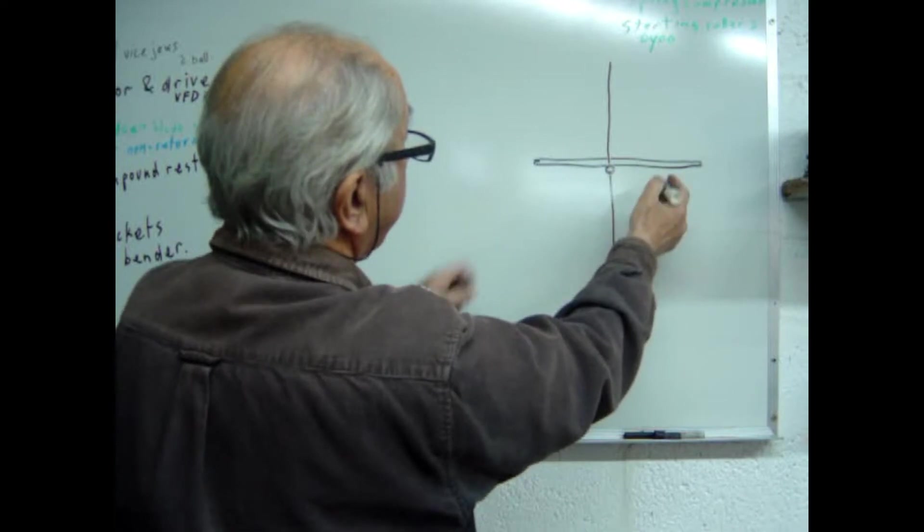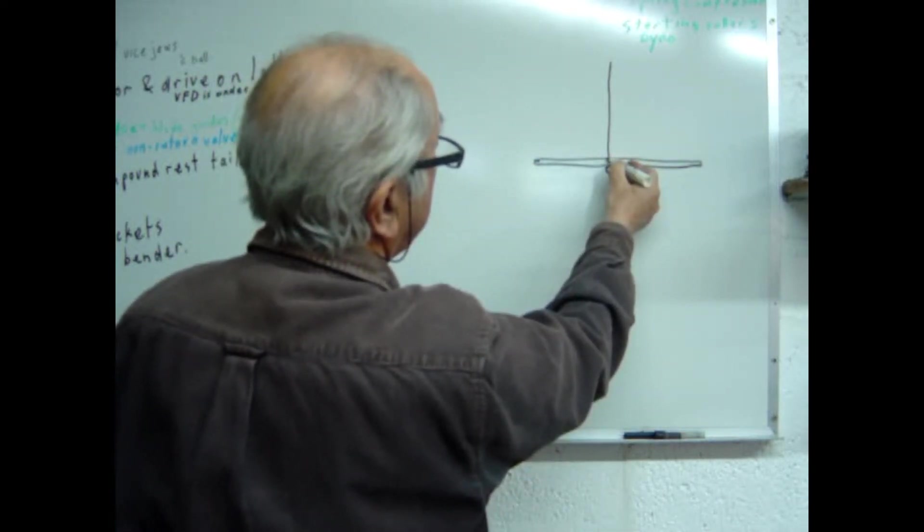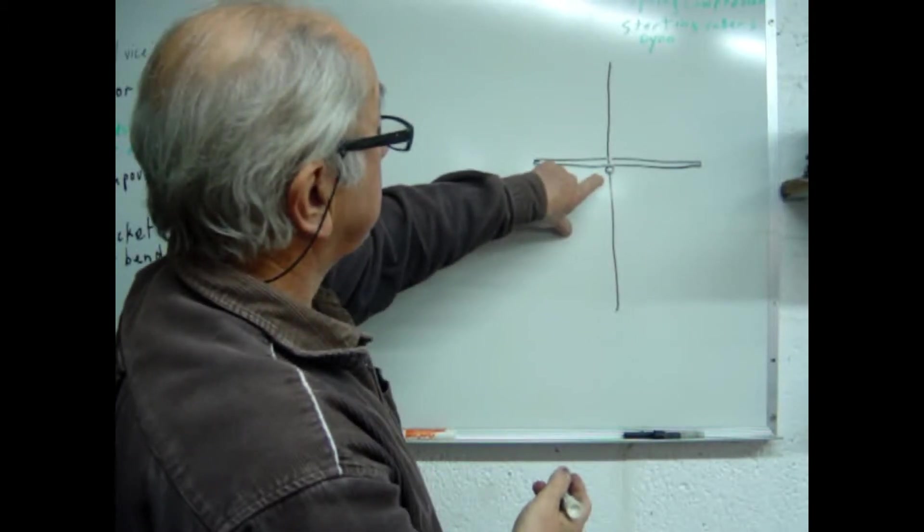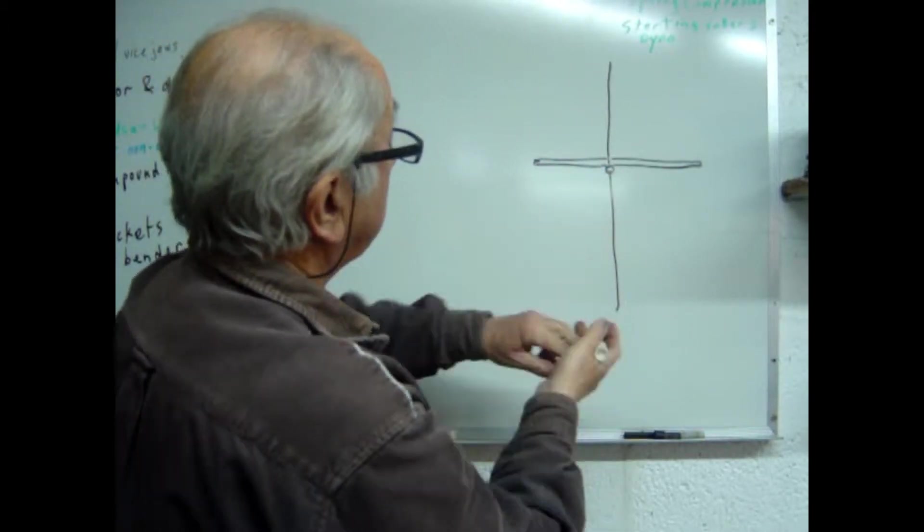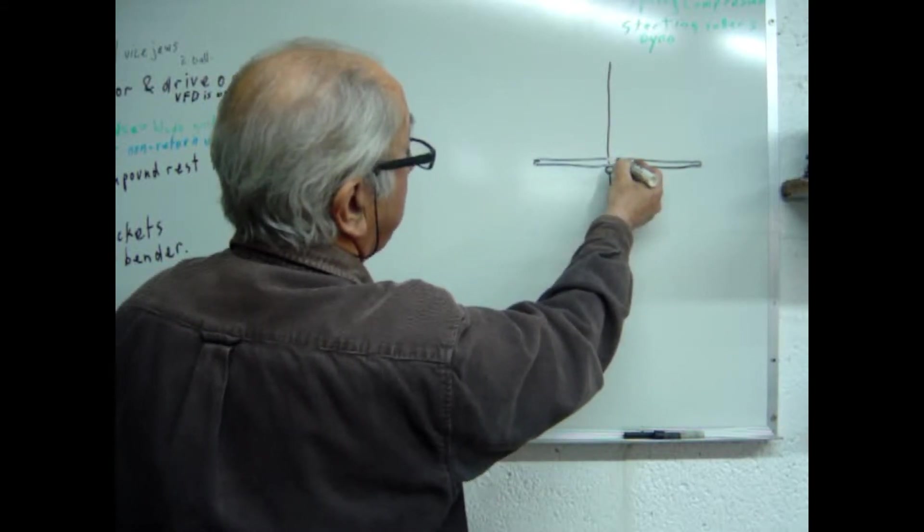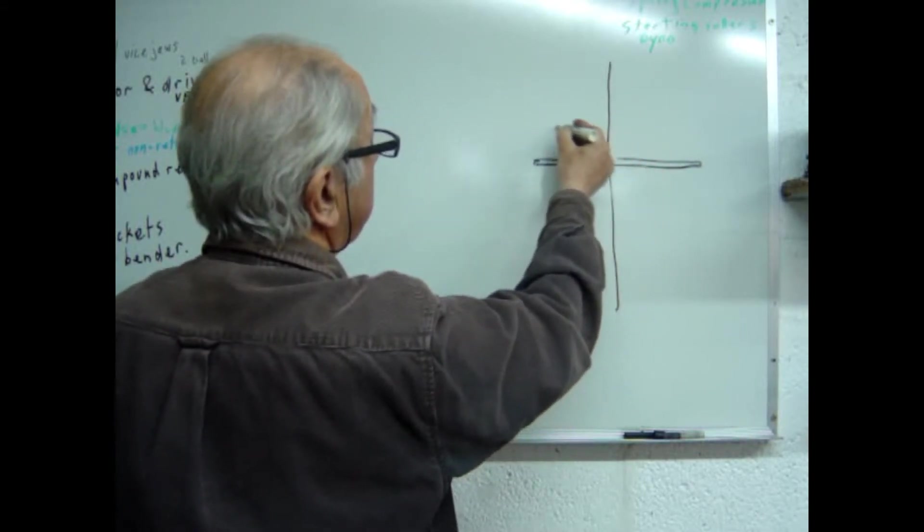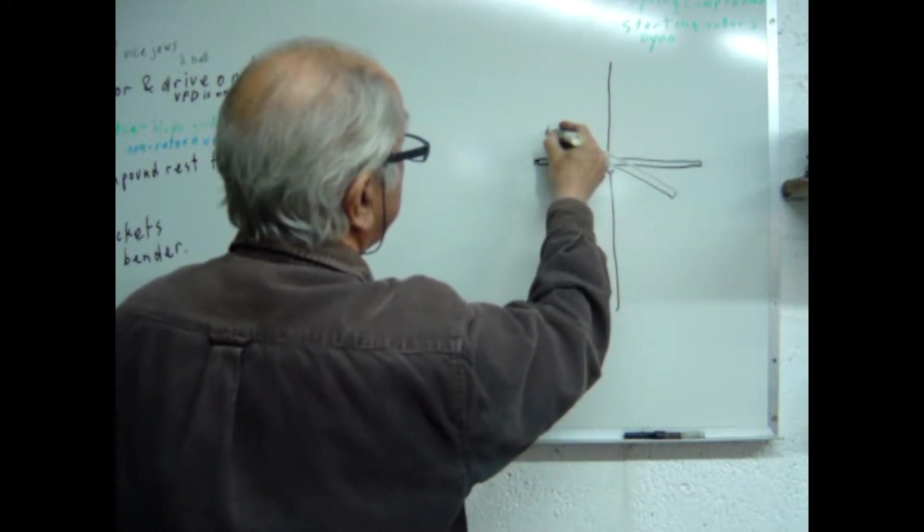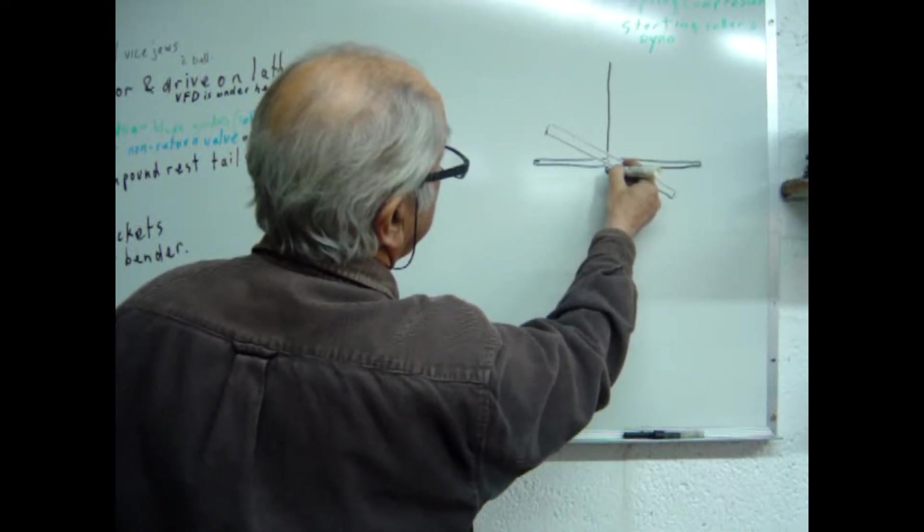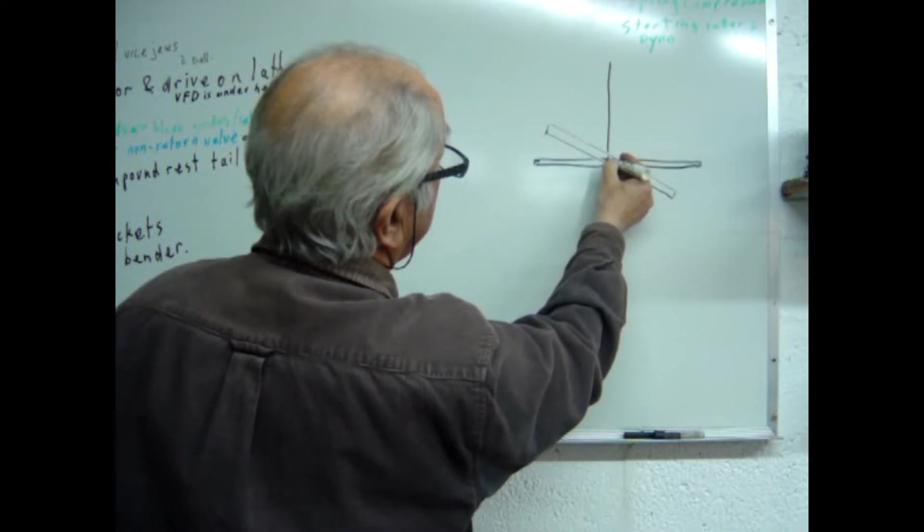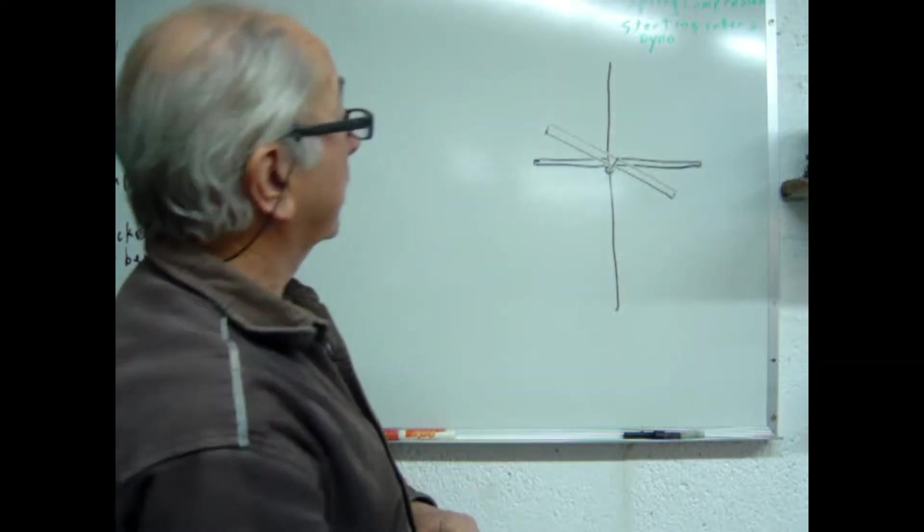But then, instead of that table pivoting up around here on the blade, as it did with the trunnion-type bearing, it would pivot down here. So this part of the table would actually move sideways quite a bit when it was tilted over here, because it's pivoting about there. You can see that that's moved sideways quite a bit.